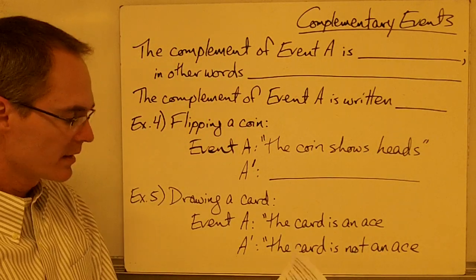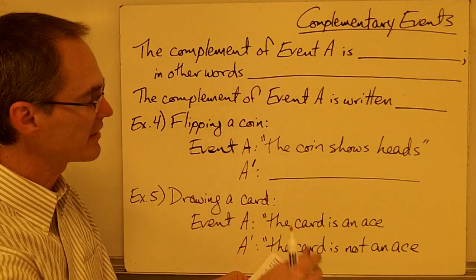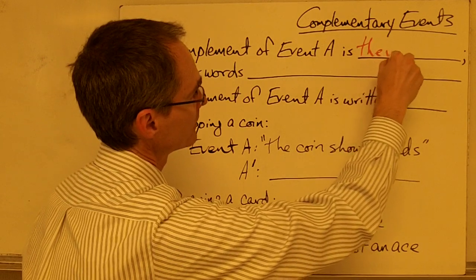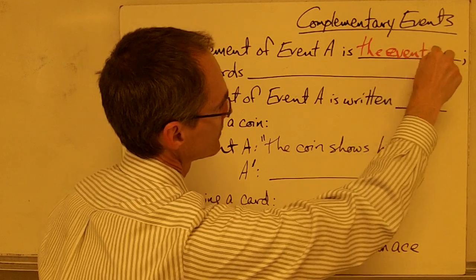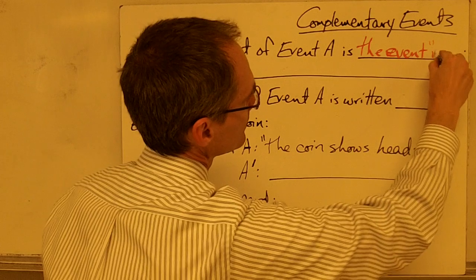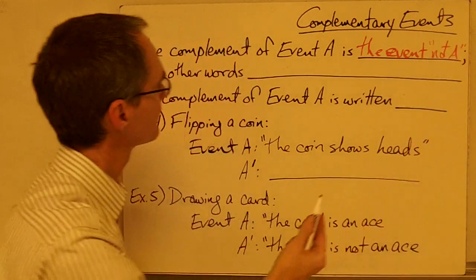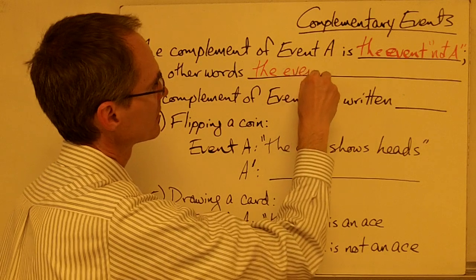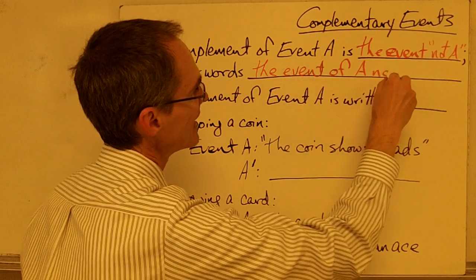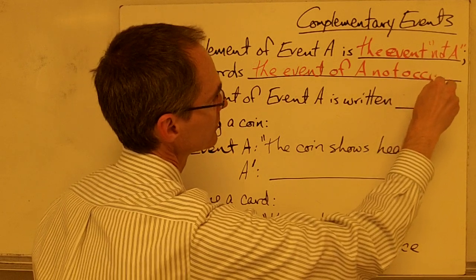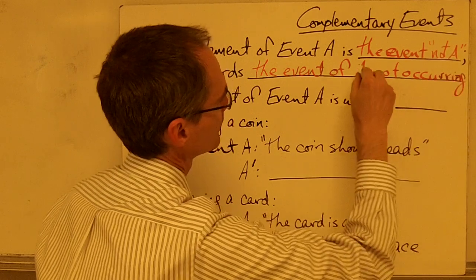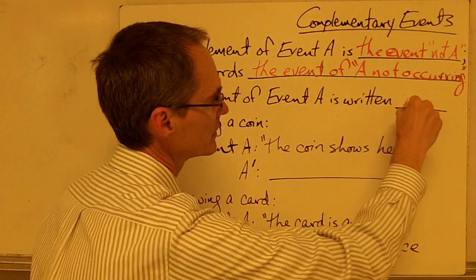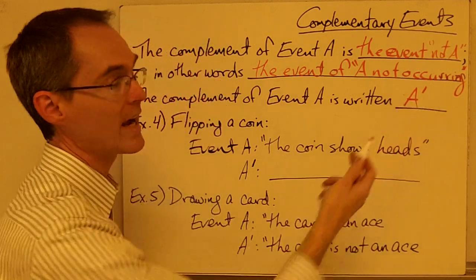Complementary events. The complement of an event — say event A — is the event "not A." In other words, the complement of event A is the event of A not occurring. The complement of event A is usually written as A prime, or A complement.